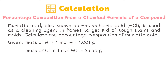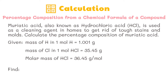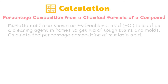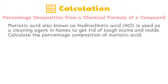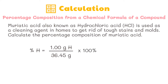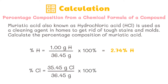When we add the two elements, we can get the molar mass of hydrochloric acid, which is equal to 36.45 grams per mole. Next, we're going to find the percentage of hydrogen and chlorine. Step two: calculate the percentage composition of each element by dividing the mass of each element by the molar mass of the compound and multiplying by 100 percent. Percentage of hydrogen equals 1 gram of hydrogen over 36.45 grams times 100 percent, which equals 2.74 percent hydrogen.